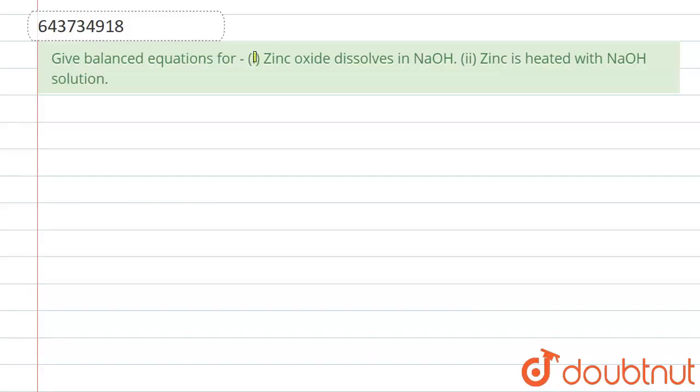Today's question is: give balanced chemical equations for first one, zinc oxide dissolves in NaOH, and second one is zinc is heated with NaOH solution.